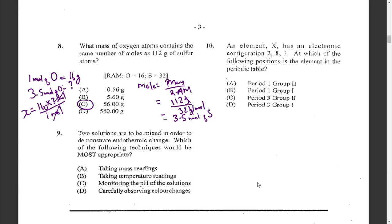Question nine: two solutions are to be mixed in order to demonstrate an endothermic change. Which of the following techniques would be most appropriate? We have seen this question before and the answer is B — taking the temperature readings.